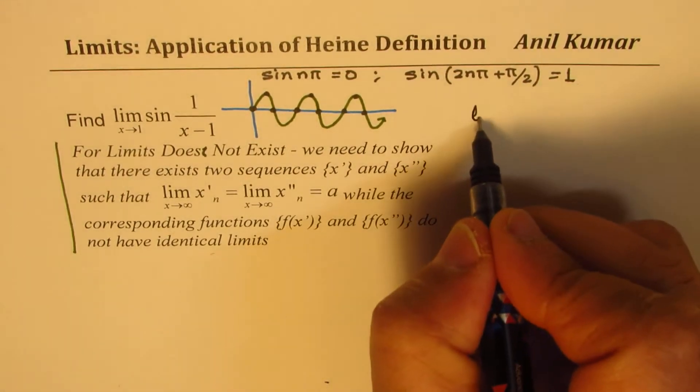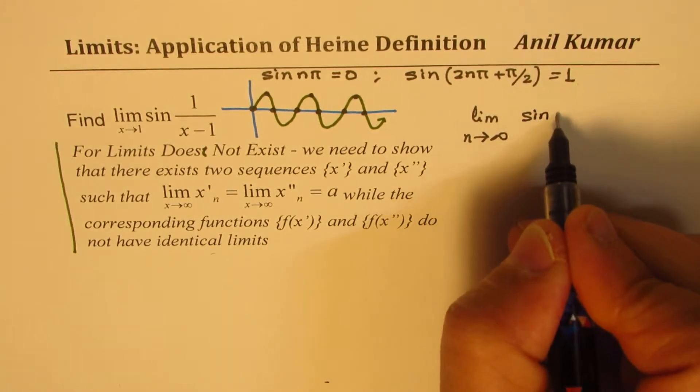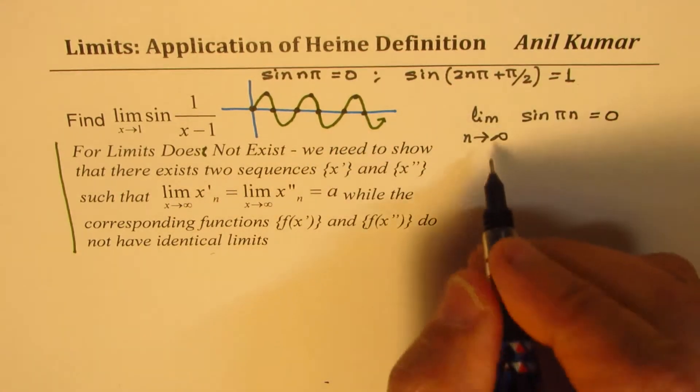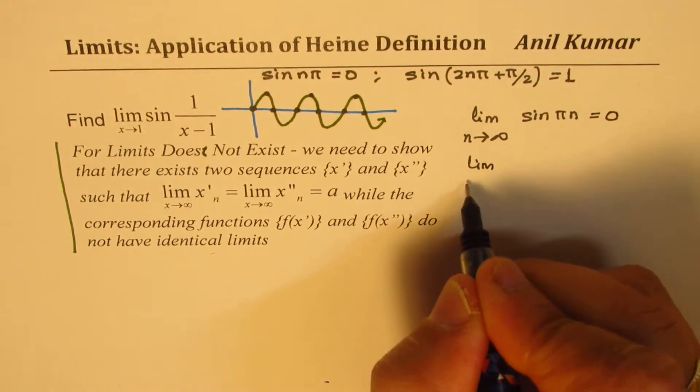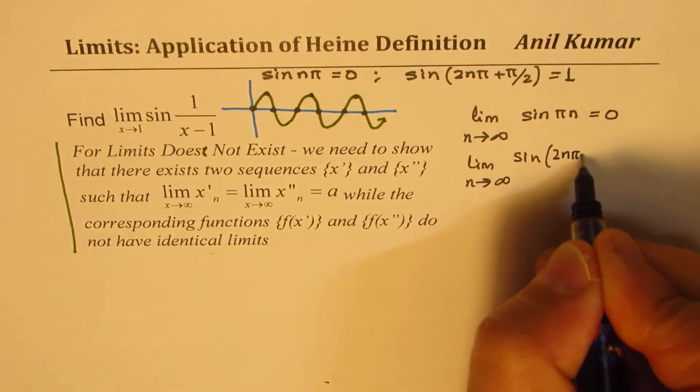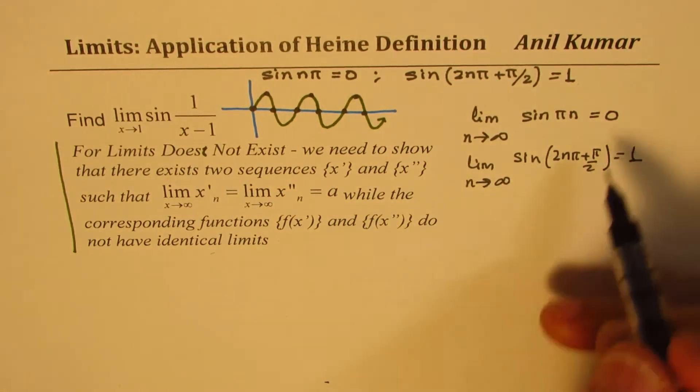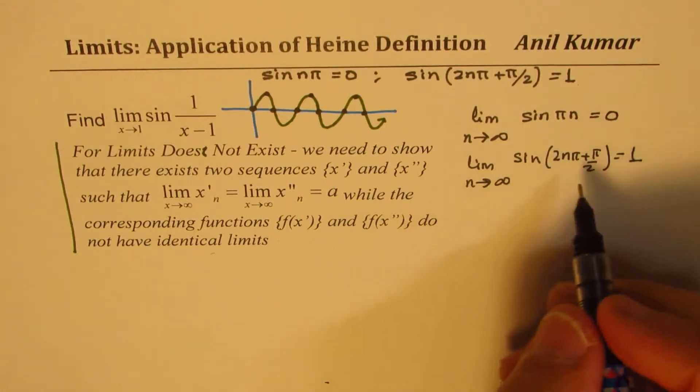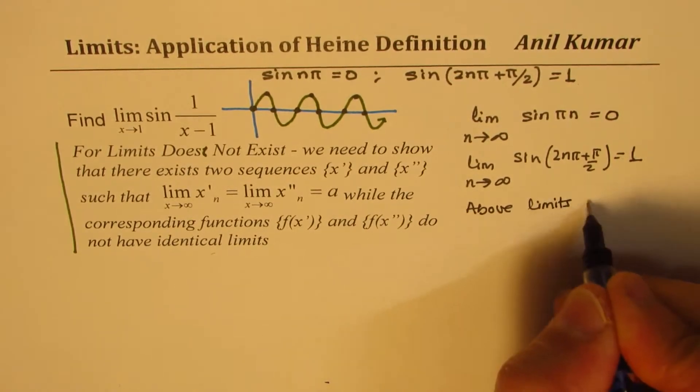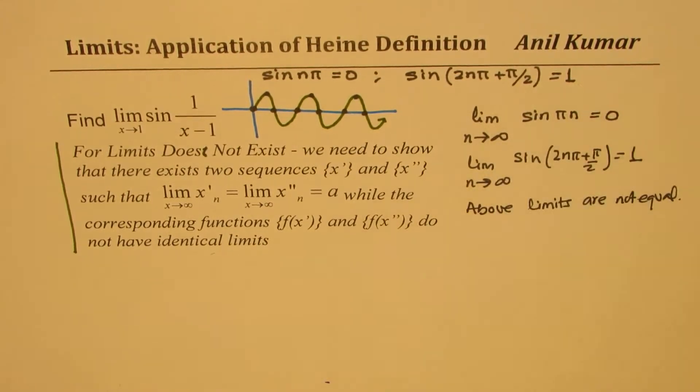So what we know is that the limit when n approaches infinity for sine n pi will be 0, and the limit when n approaches infinity for sine of 2n pi plus pi by 2 will be equal to 1. Now what you notice here is that these two limits are not same. So the above limits are not same.